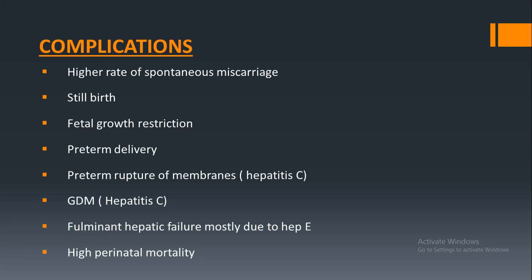Complications of any type of hepatitis include: high risk of spontaneous miscarriage, risk of stillbirth, risk of restricted fetal growth, and risk of preterm delivery. In hepatitis C there is an increased risk of preterm rupture of membranes and gestational diabetes mellitus. In hepatitis E there is a risk of fulminant hepatic failure and high perinatal mortality.